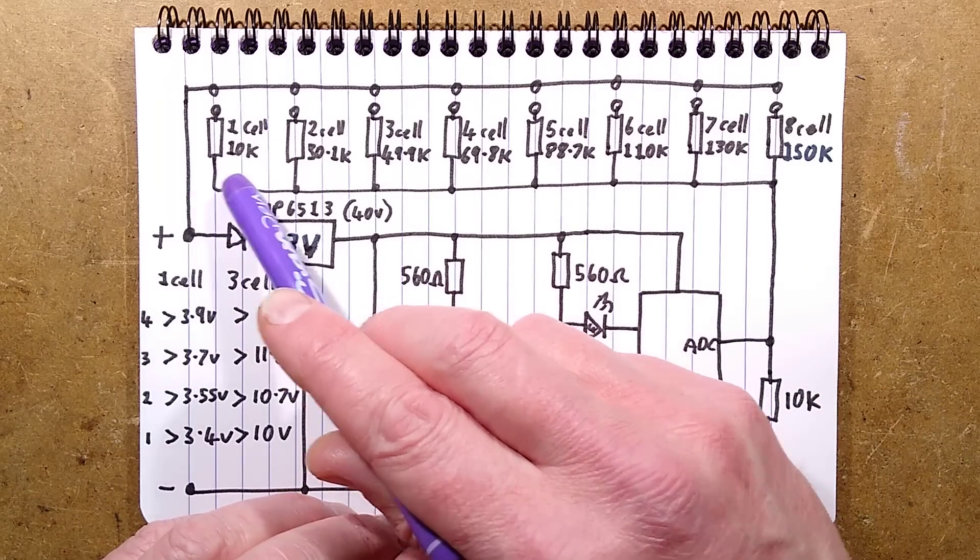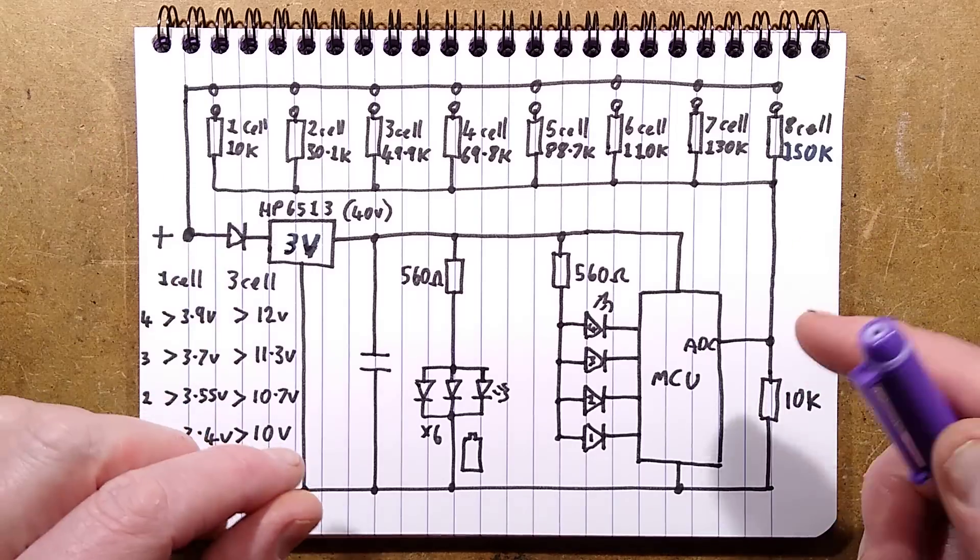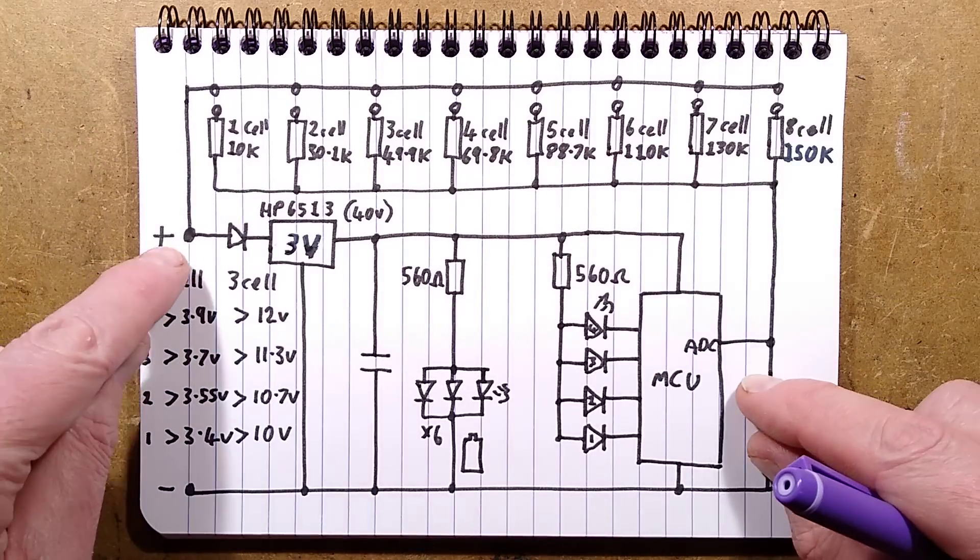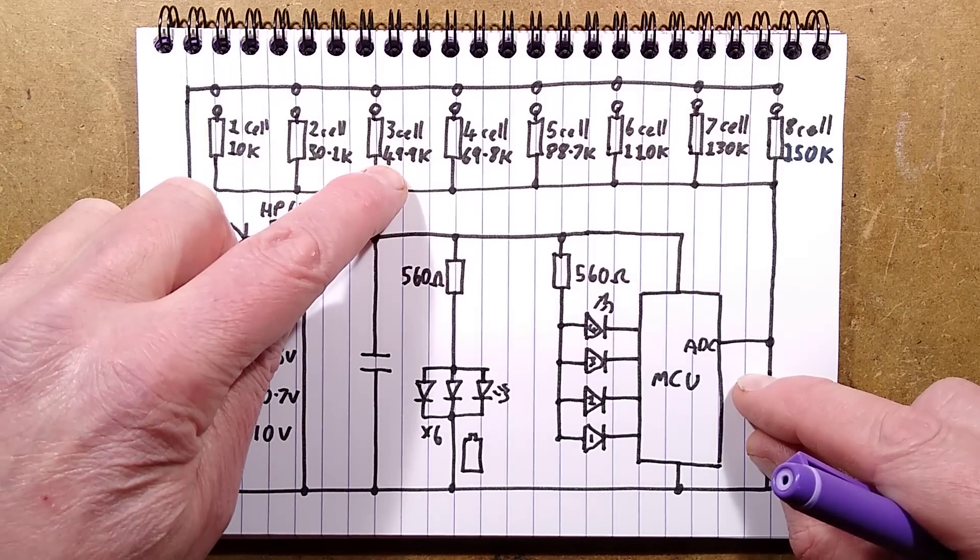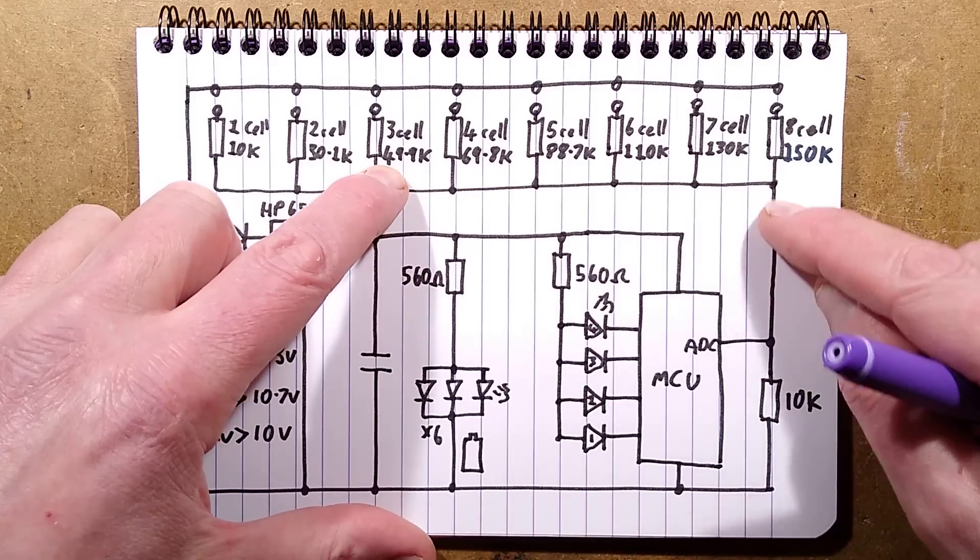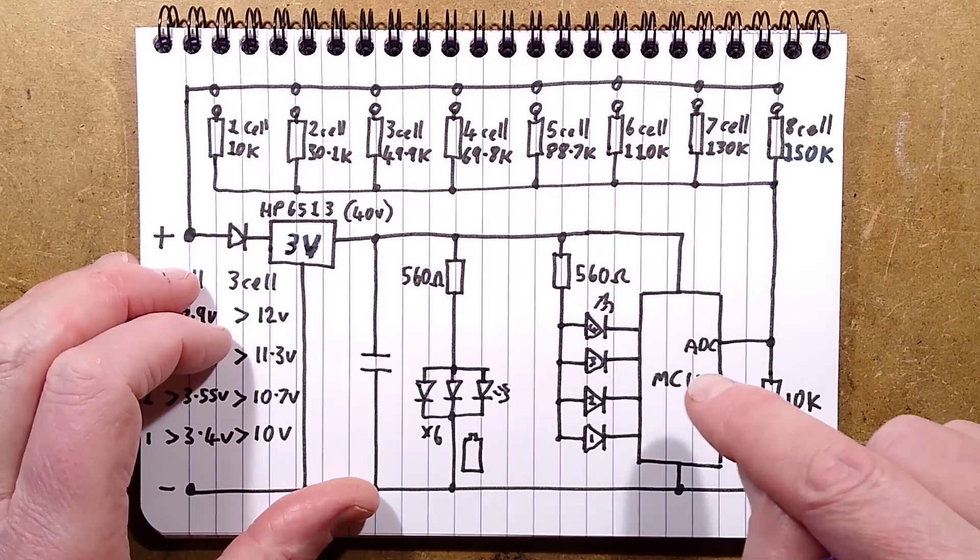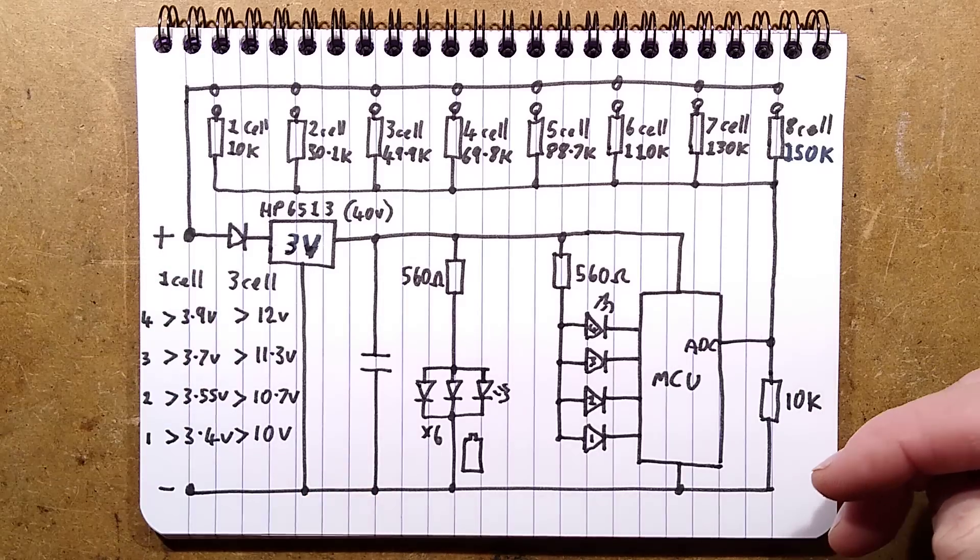Then we've got this resistor chain. So say for instance, you had a three cell pack as I had it configured there. You'd link across here and that means that the incoming supply would go via a 49.9k resistor and form a potential divider with a 10k resistor which would then go to the microcontroller. And it is just programmed internally with the thresholds that it will switch the LEDs.